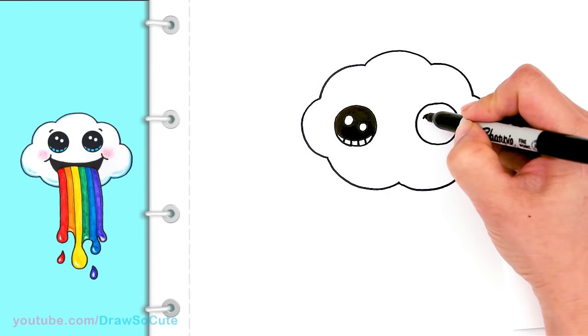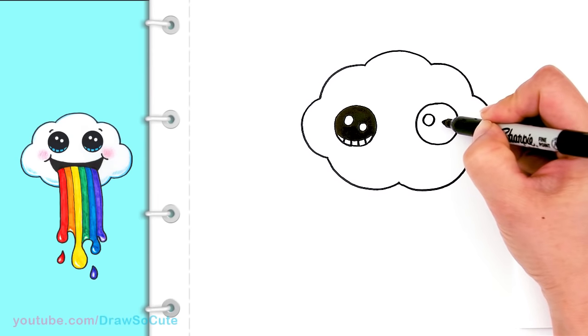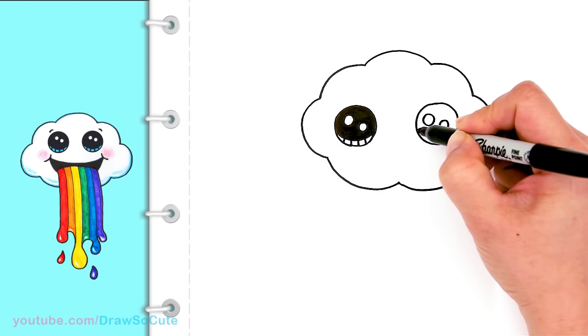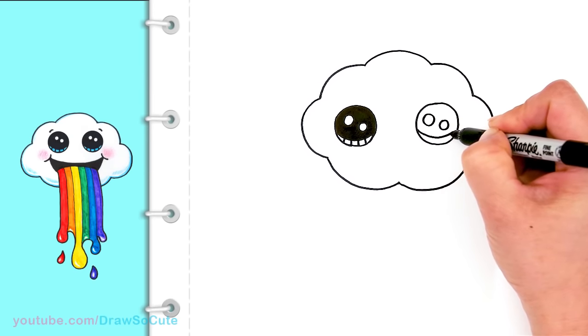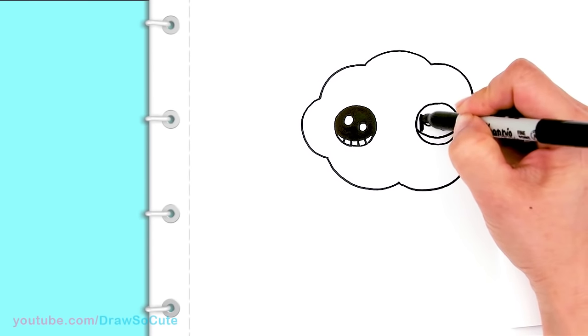And so, same thing on this side. Two small circles and a curved line at the bottom. And shade in the top.